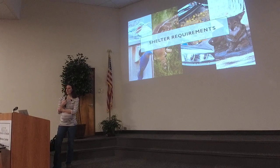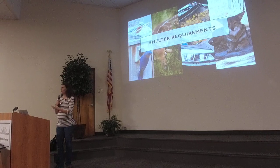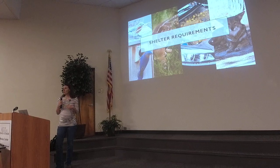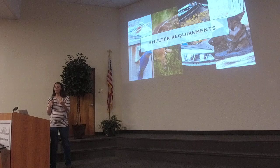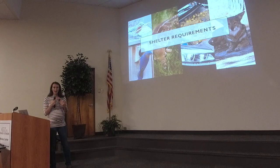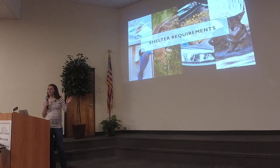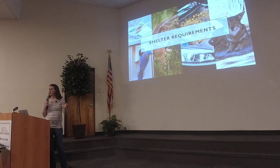The last shelter type is protection from the elements, which we can all relate to pretty easily. When it's hot outside you want shade; when it's rainy, cold, or windy, you want something to protect you from the wind, the cold, and the rain. It's simply a matter of figuring out what each species requires and what that food, water, or shelter looks like for that specific species.